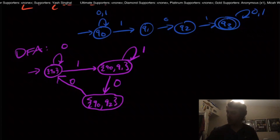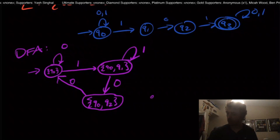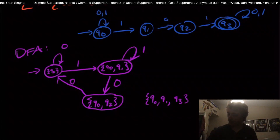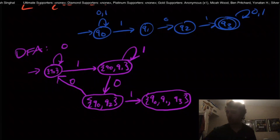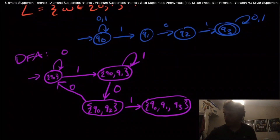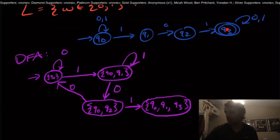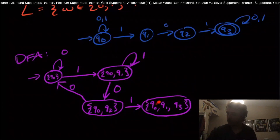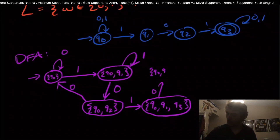If we go on one from state {q0, q2}: q0 can go to itself or to q1 on input one, and q2 on one goes to q3. So I'm going to make a state {q0, q1, q3} and transition there on one. Then from {q0, q1, q3} on input zero: q1 goes to q2, q0 goes to itself, q3 goes to itself. So on input zero we go to state {q0, q2, q3}.